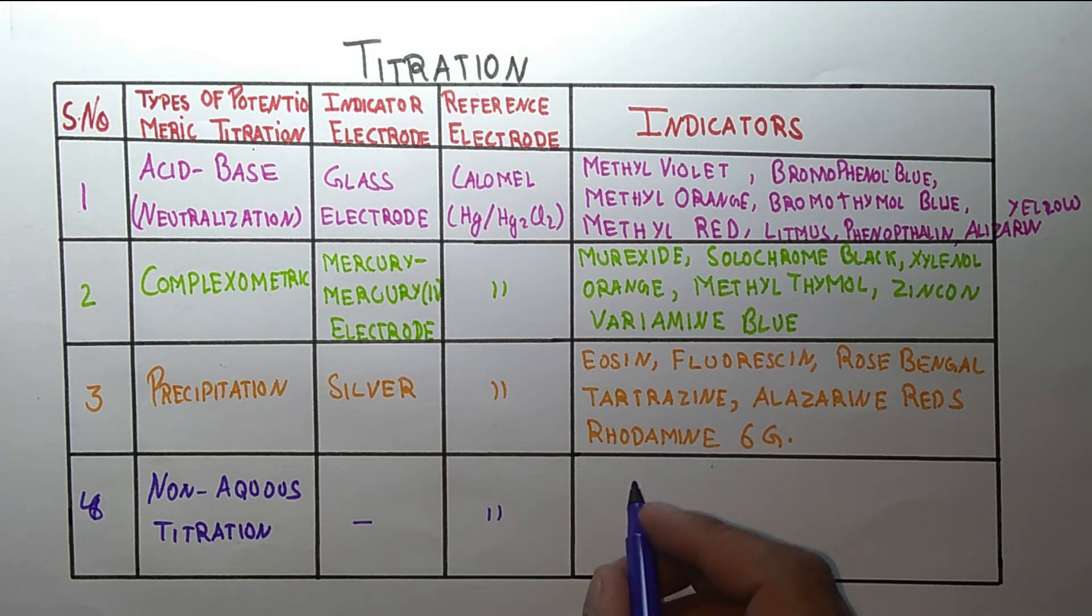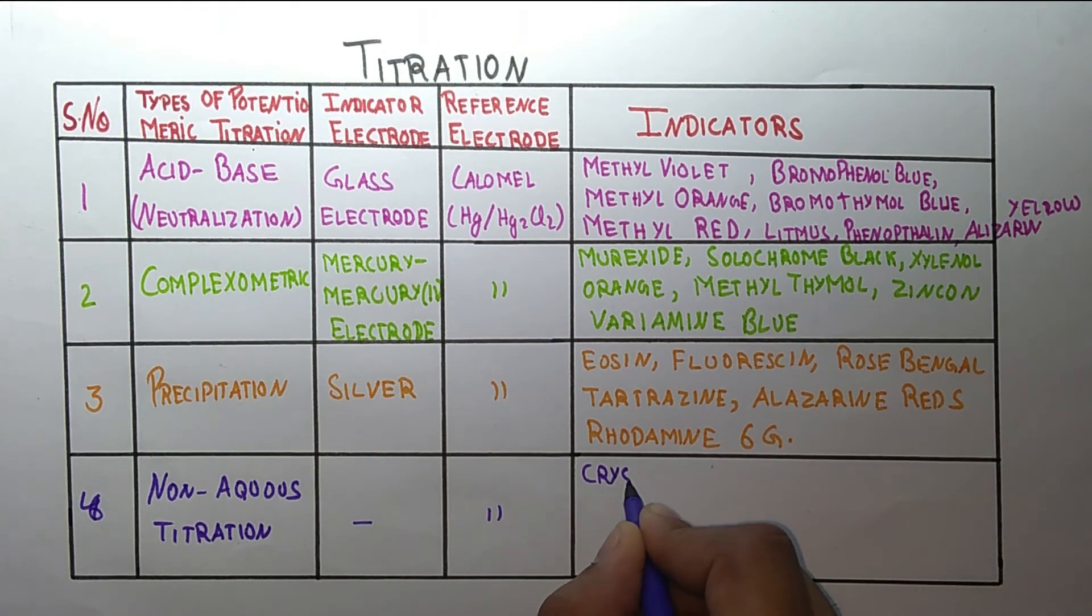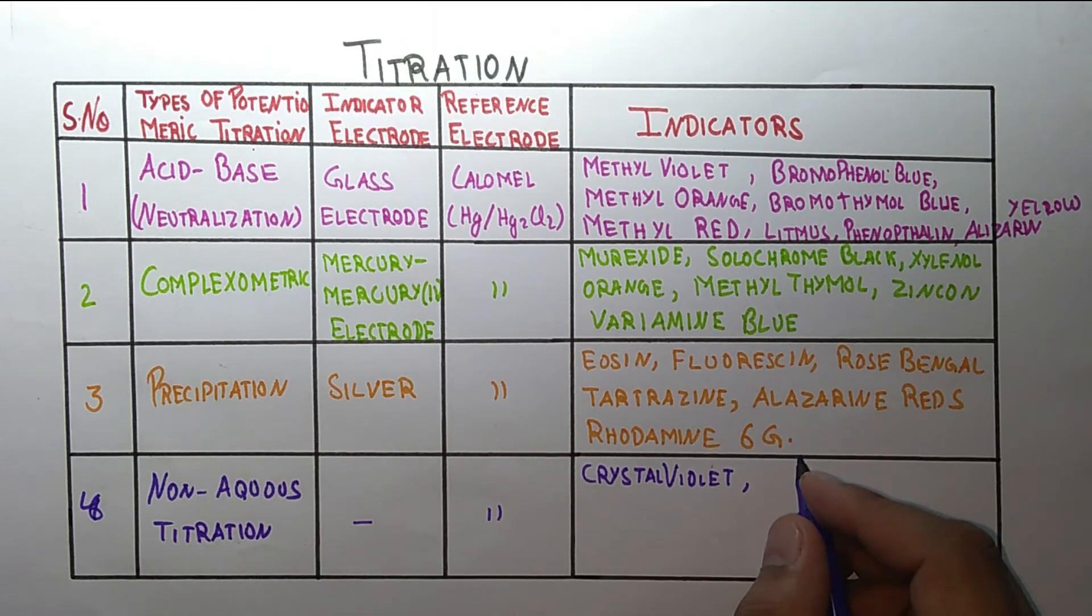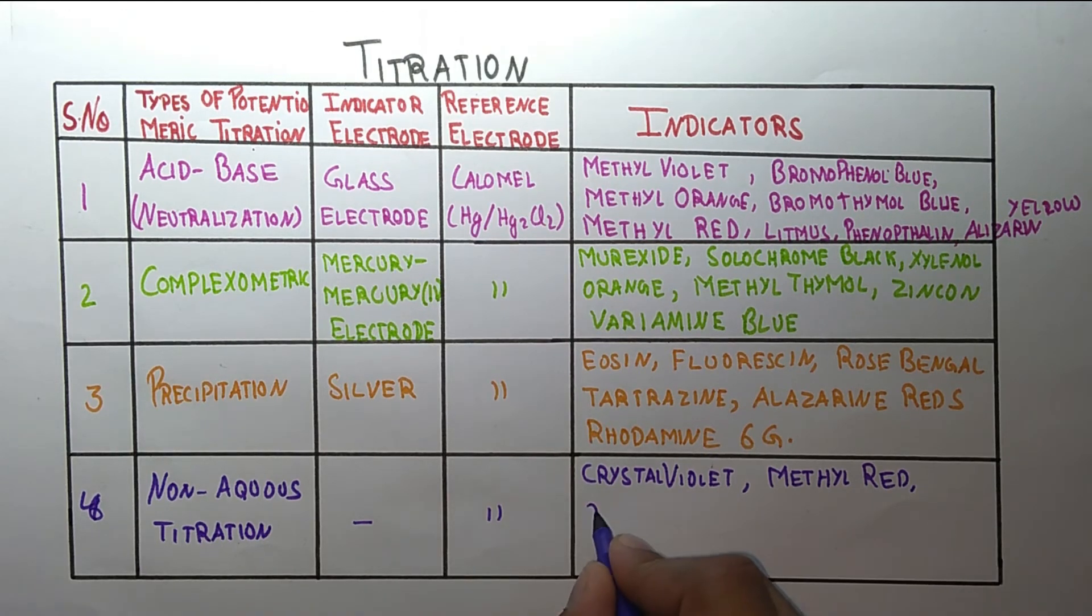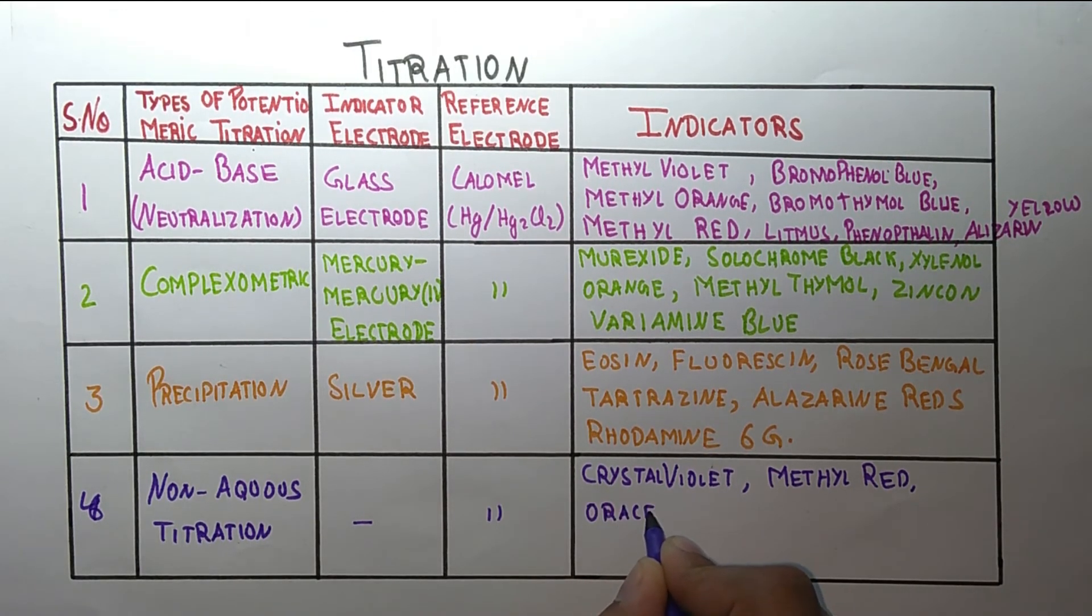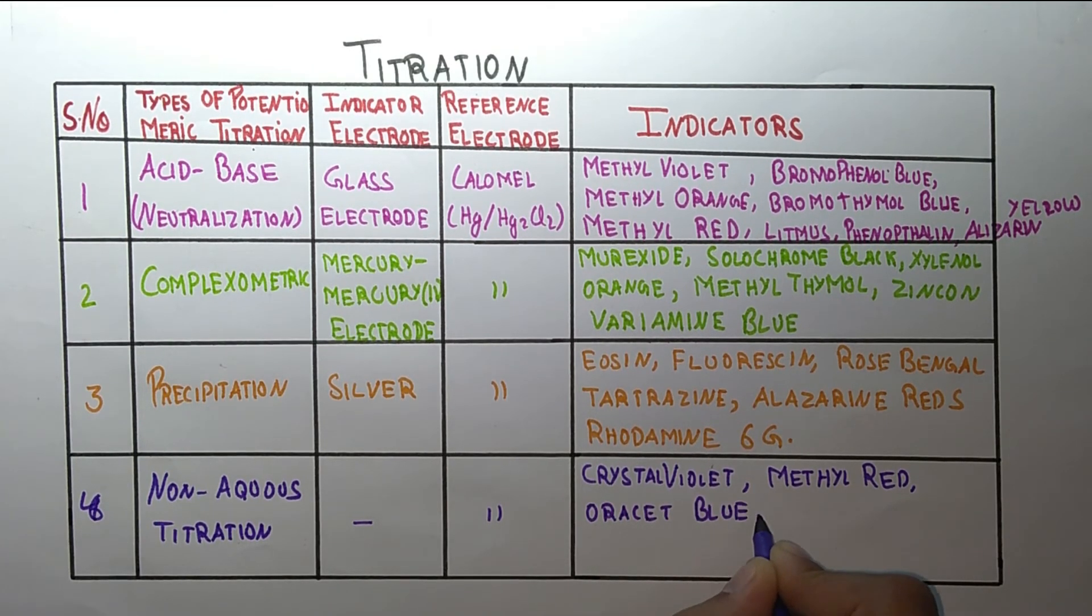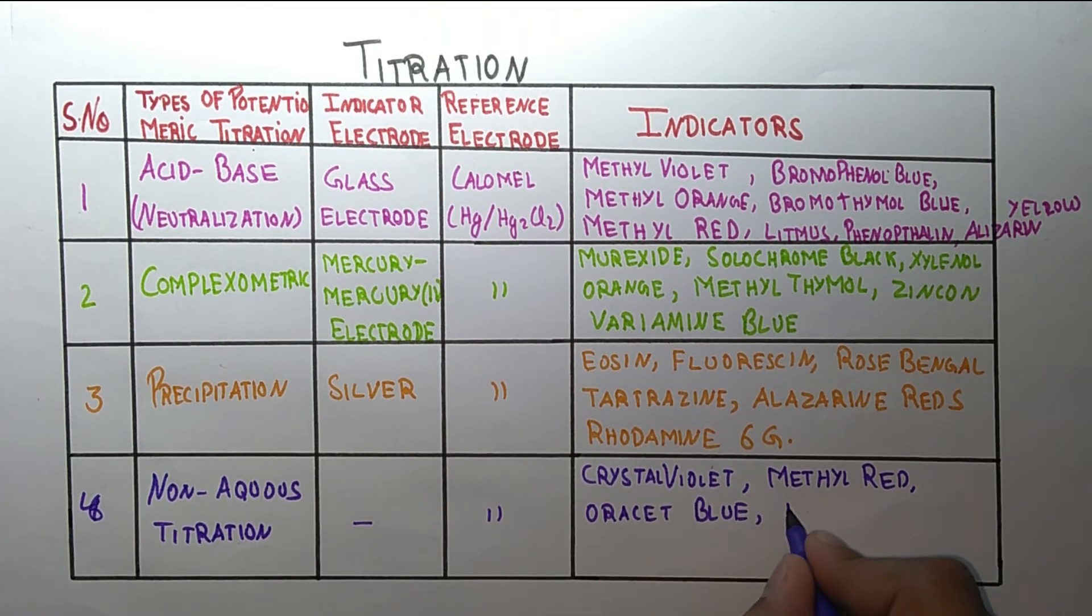The indicators are crystal violet, methyl red, oracet blue, and methyl orange.